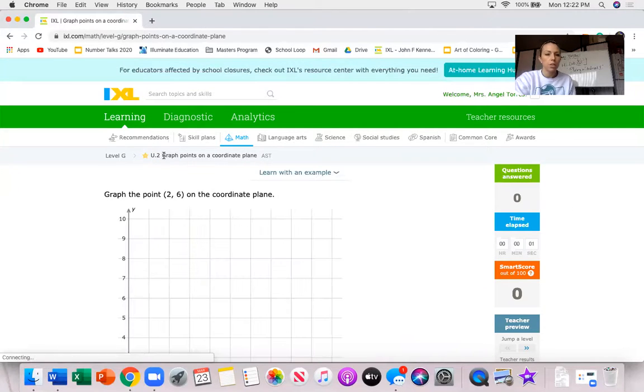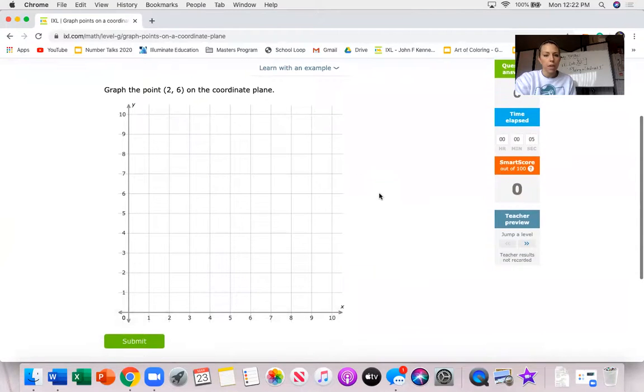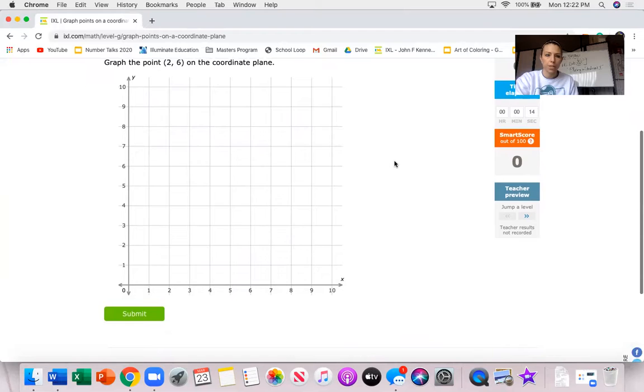It is U.2 graph points on a coordinate plane. The reason why I'm calling it graphing in quadrant one is because all of the points that we're going to be graphing are positive. So this is going to be a review for most of you and then for the rest of you here's how this works.